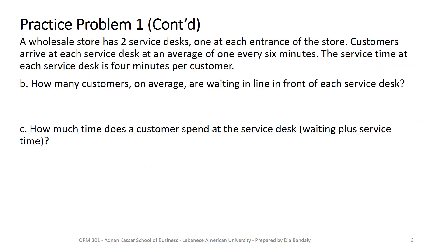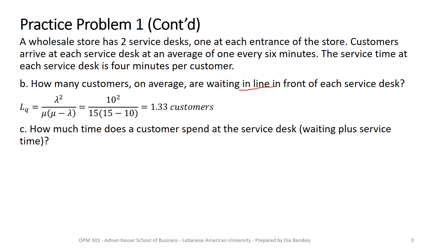How many customers on average are waiting in line in front of each service desk? This is LQ. For a single server, the LQ formula is lambda squared over mu times (mu minus lambda). We plug everything in and get 1.33 customers. Remember, do not round — these are averages, and it's very important that you keep them as-is.